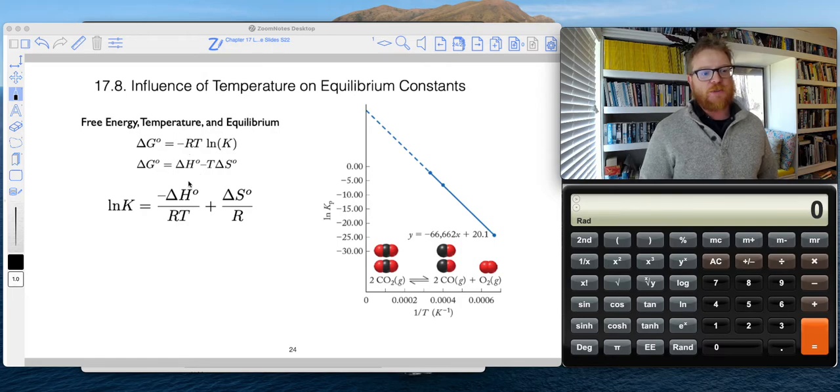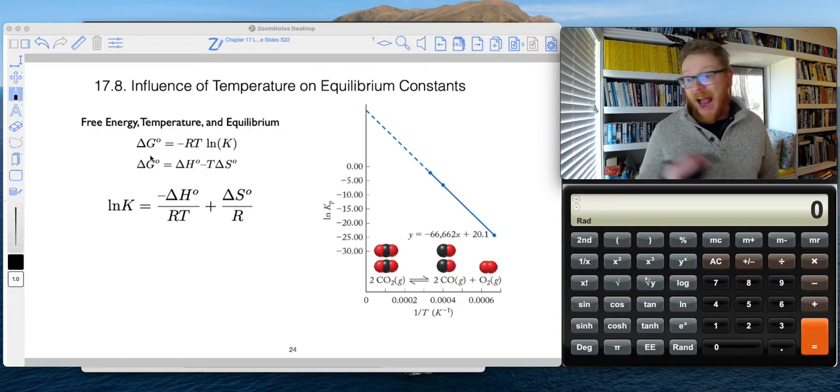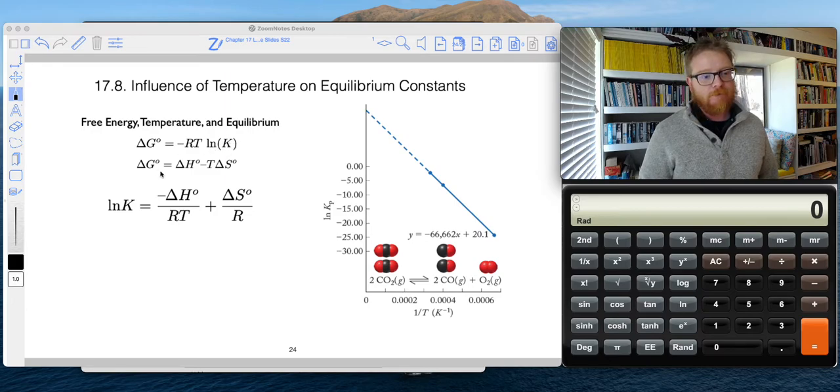And so the way this works now, we take advantage of these two equations. So we've worked out, when we're at equilibrium, our standard free energy of reaction is negative RT times natural log of K. But also, we can call standard free energy of reaction equal to the enthalpy of reaction minus temperature times the entropy of the reaction.